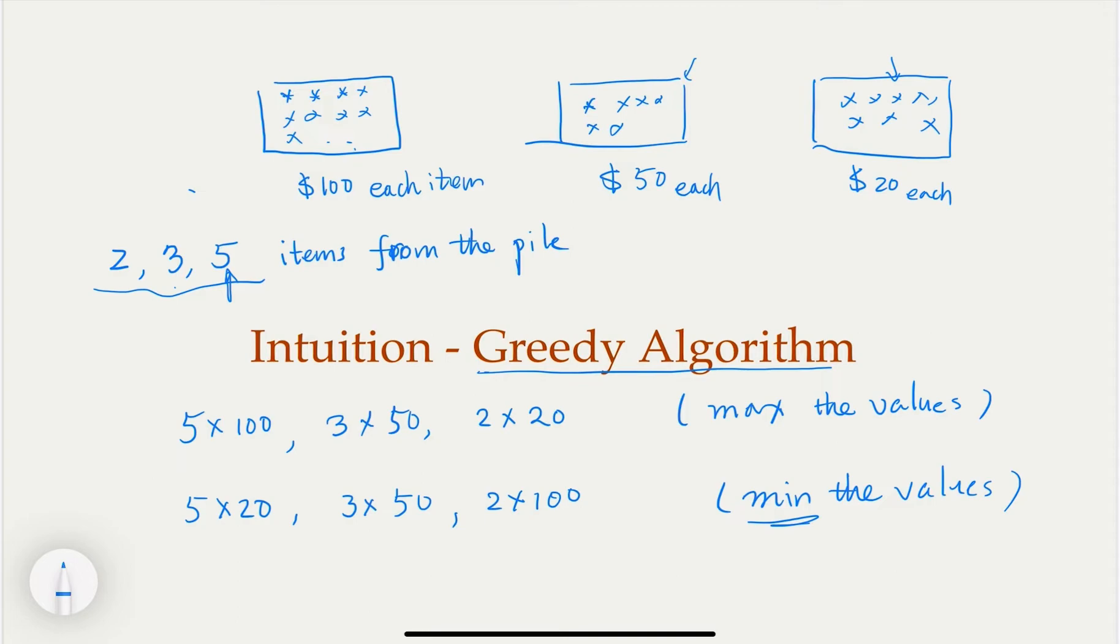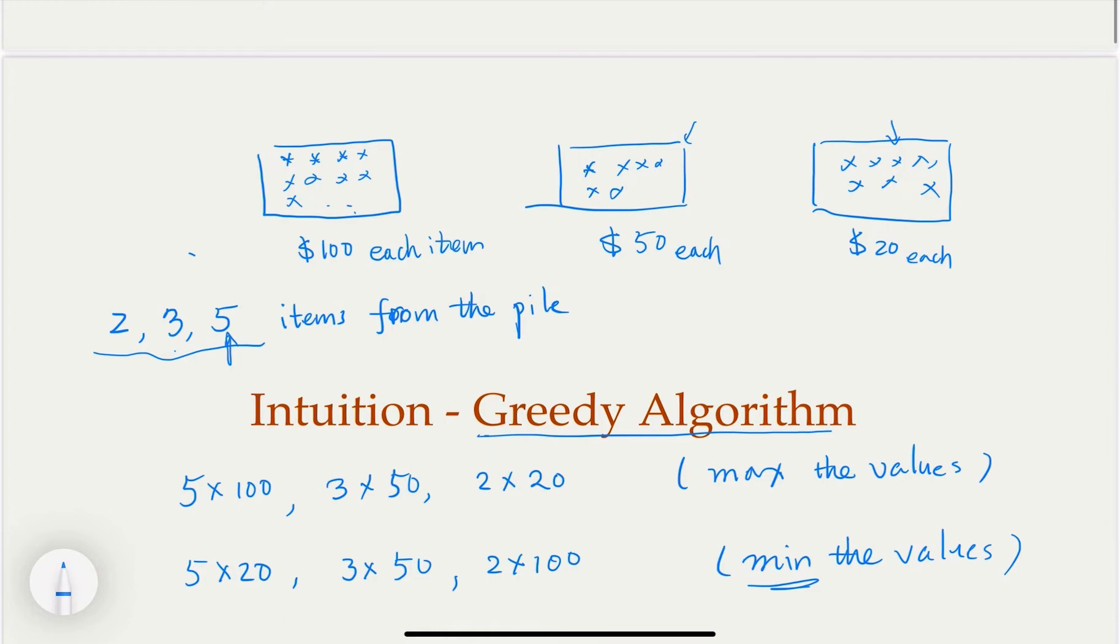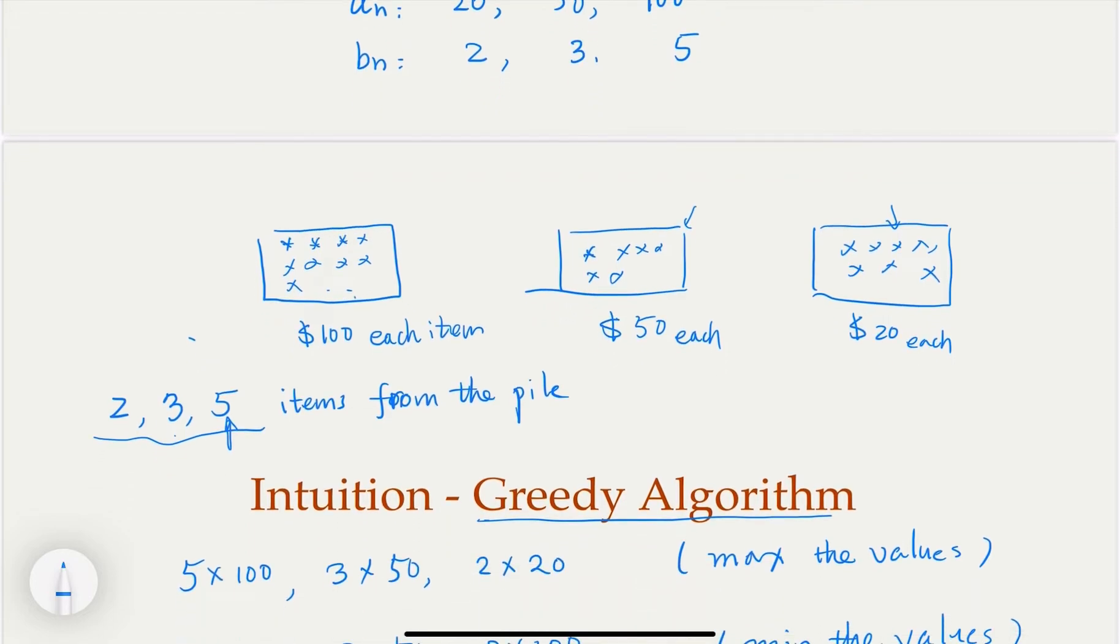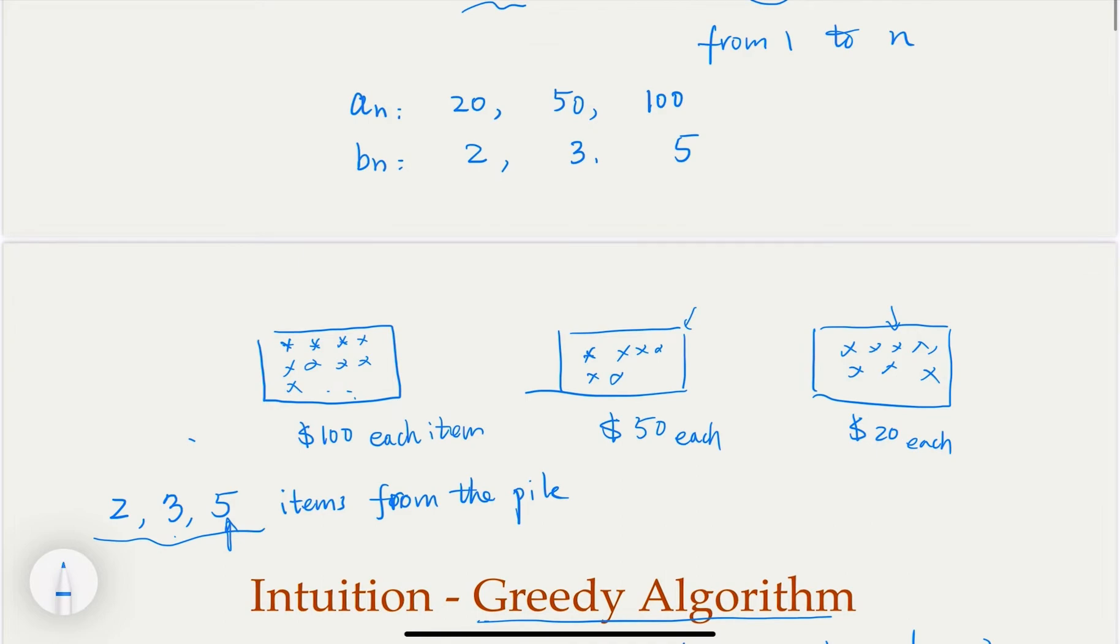In other words, in our original statement, here's the two sequences. This is intuition here. In this case, an is the price, and we're going to sort it in increasing order, 20, 50, and 100. And the bn here is going to be two, three, five. So, the in order one, you achieve maximum value, which is, which is this, this arrangement. Out of order one, or reverse order one is going to be smallest. So, this would be in order. You're going to have 20 times 2, 50 times 3, and 100 times 5.